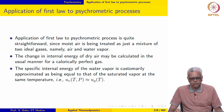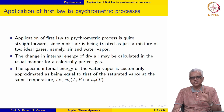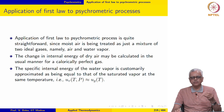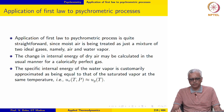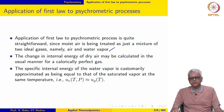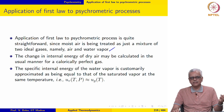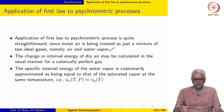Application of the first law to psychrometric processes is quite straightforward. The simplicity comes from treating moist air as a mixture of two components — two ideal gases: dry air and water vapour. So this is really no different from applying the first law to a mixture of ideal gases that we have done before.